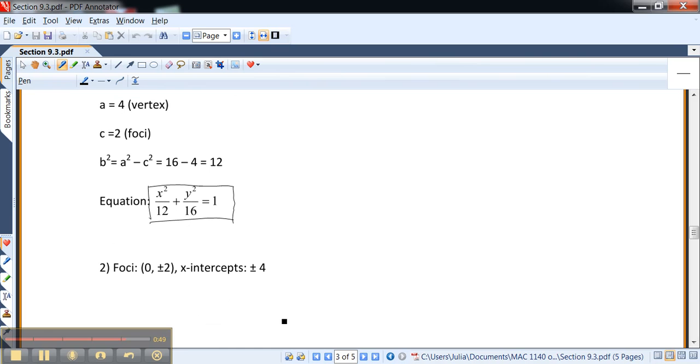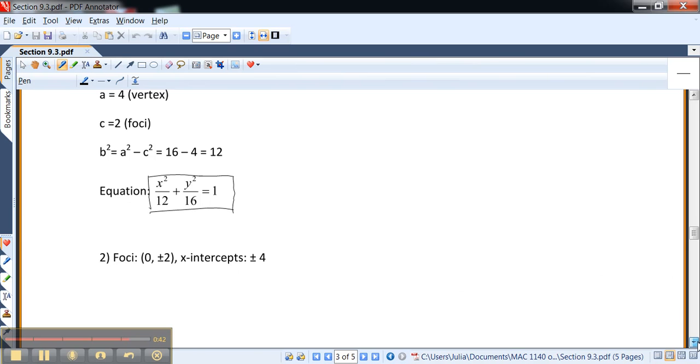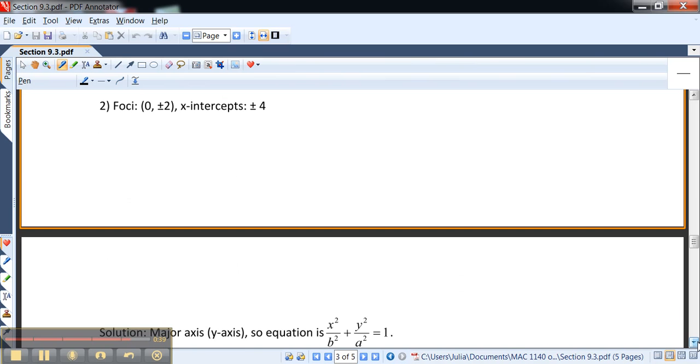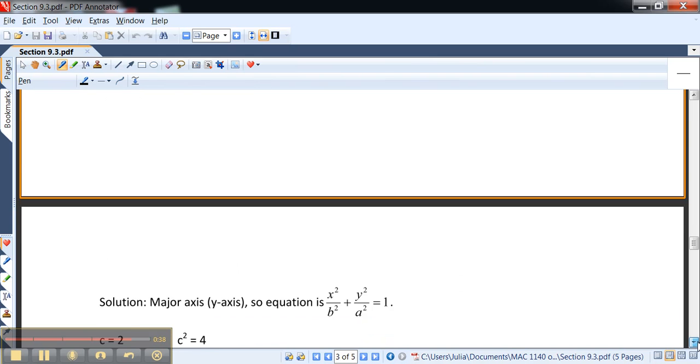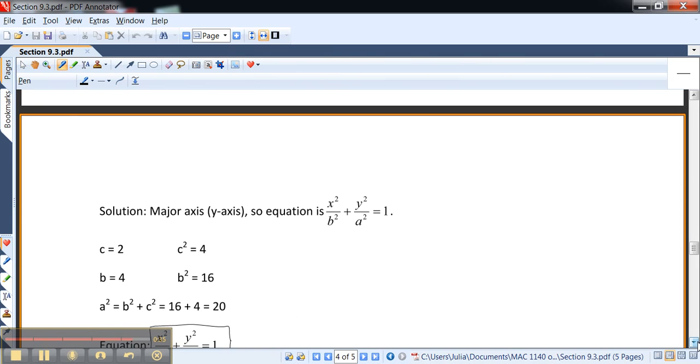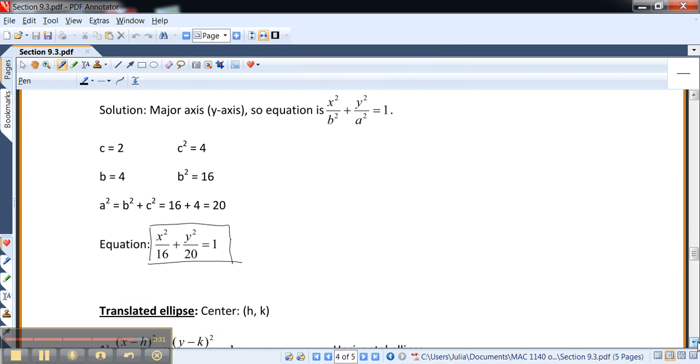If we have the foci and just simply x-intercepts, not vertices, then because the foci are on the y-axis, we actually have a vertical ellipse. So things change. This time we know b² and we know c and, of course, c². But we don't know the a. And this is what it equals to, which is 20. And that's how come we get this equation.